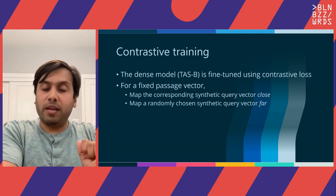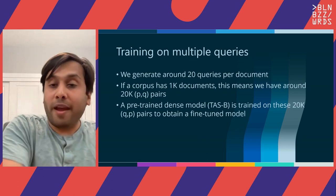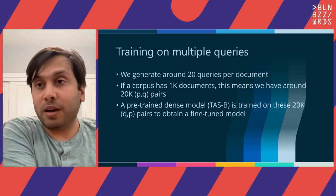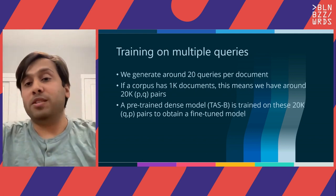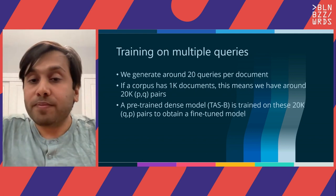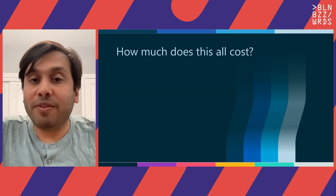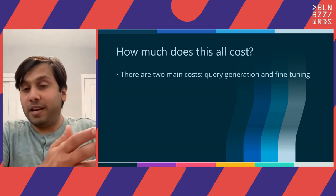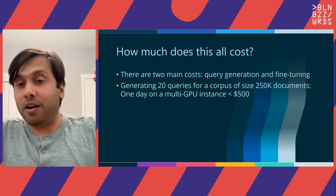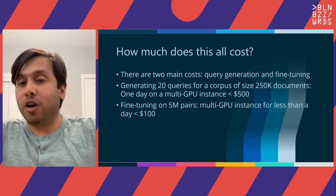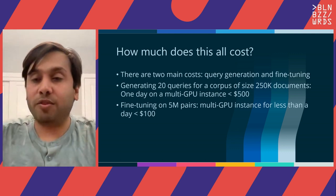We generate 20 different queries for every given document. If a corpus has 1,000 documents, you generate around 20,000 query-passage pairs, and on those you train the model — that's how you obtain the fine-tuned model. The cost for all of this has two parts: query generation and fine-tuning. Query generation for a 250,000-document corpus takes less than $500. Fine-tuning the model on the resulting 5 million pairs — 20 times 250,000 — takes less than $100. So that's the rough cost for this entire procedure.